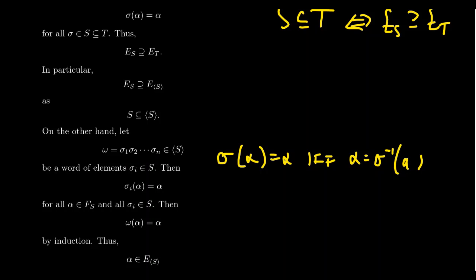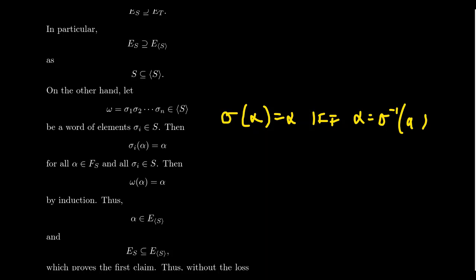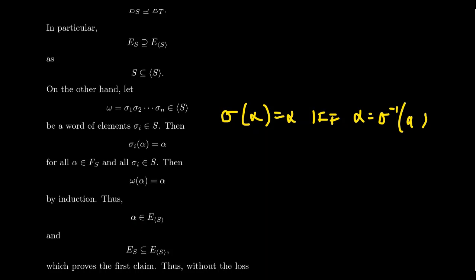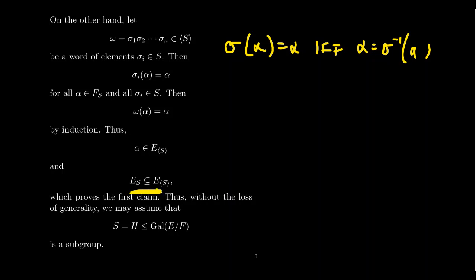If you take each individual sigma_i, it fixes alpha, sending alpha to alpha. By induction, omega of alpha equals sigma_1(sigma_2(⋯(sigma_n(alpha))⋯)) = alpha, since each step fixes alpha. So if omega is a product of automorphisms that fix alpha, then their product also fixes alpha. Thus alpha belongs to E_{<S>}, giving us the reverse containment. So E_S = E_{<S>}, and without loss of generality we can suppose the set of automorphisms is always a subgroup.